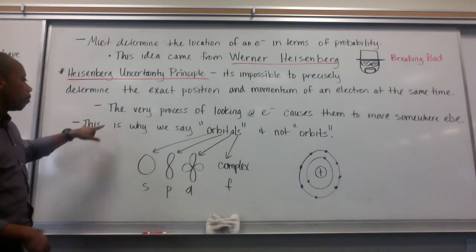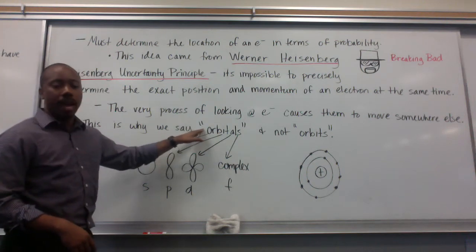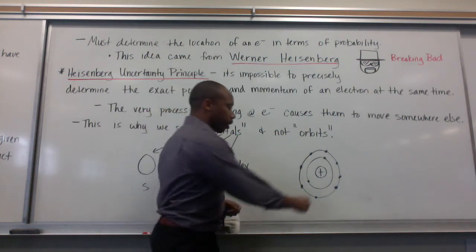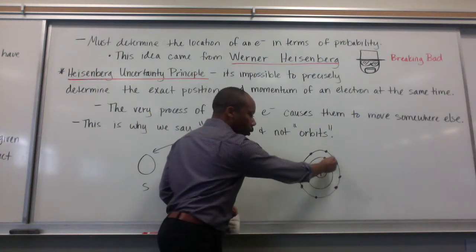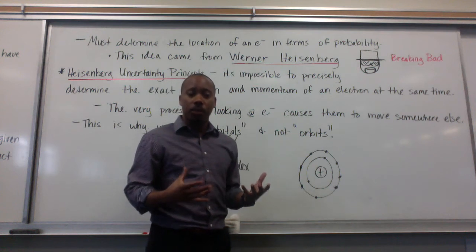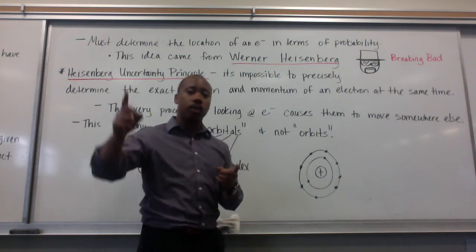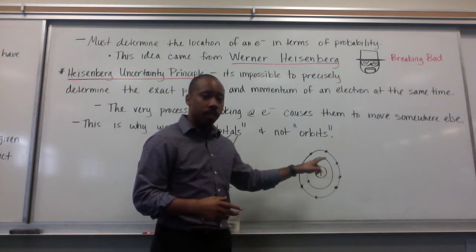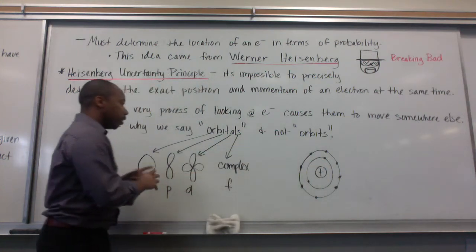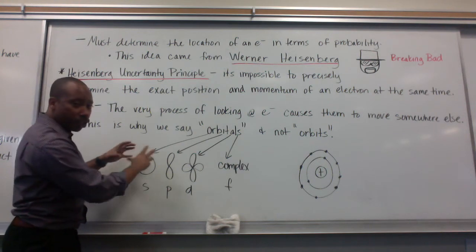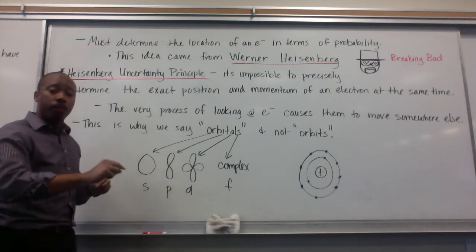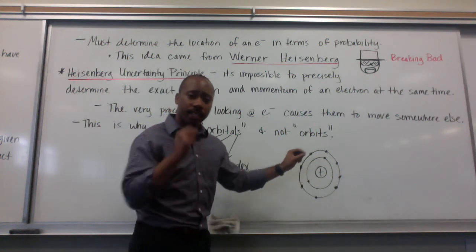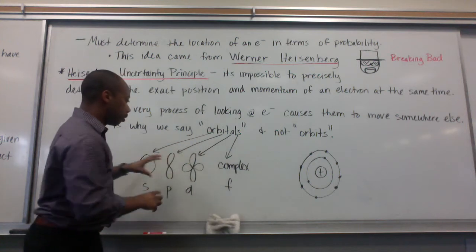Now, this is why we say the word 'orbitals' and not 'orbits.' Niels Bohr said orbit — he thought that electrons were in elliptical paths going around the nucleus, and we can predict those orbits just like in our solar system. But for electrons, you can't predict them; they're not exact orbits. Rather, these electrons are in these mathematically described spaces called orbitals — a three-dimensional space somewhere in there. We can't pinpoint exactly where, so we don't say 'orbits' because that gives the notion that it's direct and predictable.